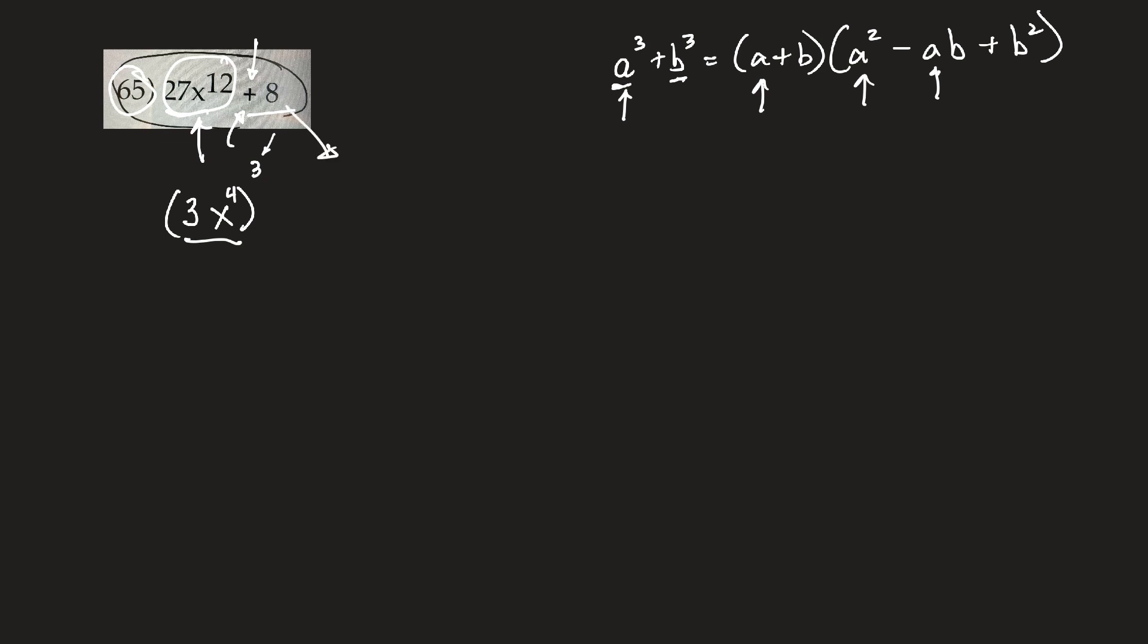And then b, 8 is 2 times 2 times 2. So b, that last part here, the b part, is just going to be plain 2. So wherever there's a b, I'm going to be putting in a 2. So a is 3x to the 4th, and b is 2.